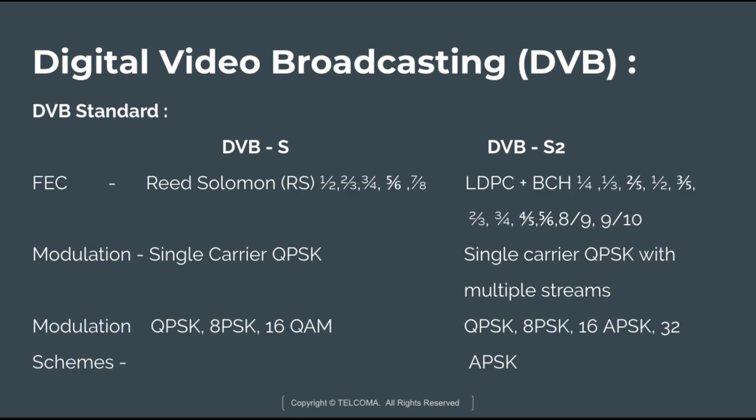The next difference is Forward Error Correction. In DVB-S, Reed-Solomon coding is used with rates 1/2, 2/3, 3/4, 5/6, and 7/8. In DVB-S2, LDPC (Low Density Parity Check) and BCH coding are used, with rates 1/4, 1/3, 2/5, 1/2, 3/5, 2/3, 3/4, 4/5, 5/6, 8/9, and 9/10.